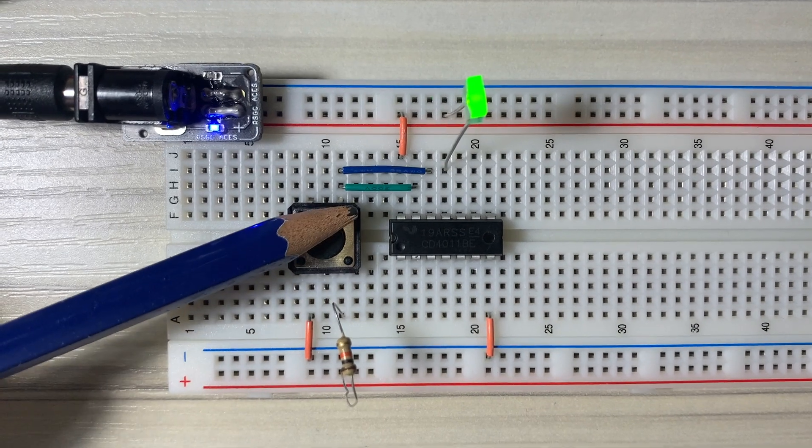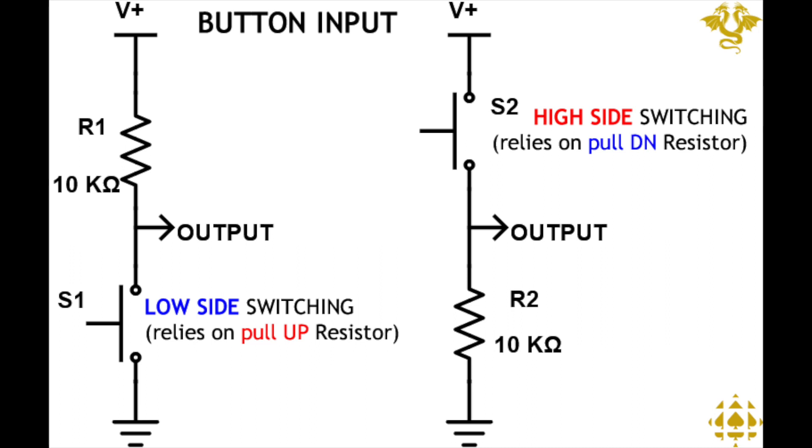This is the button input. The button input has two configurations, pull-up and pull-down resistors. A pull-up resistor, as indicated in the name, has the resistor above the button. This is called low-side switching, because the input relies on the pull-up resistor.